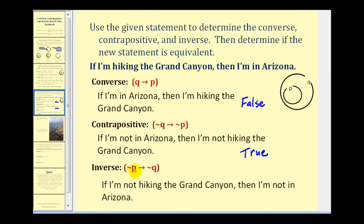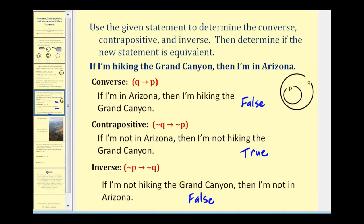The inverse would be if not P then not Q, so: if I'm not hiking the Grand Canyon, then I'm not in Arizona. If I'm not hiking the Grand Canyon, that means I'm outside P. Just because I'm outside P doesn't mean I'm outside Q. So this is not logically equivalent to if P then Q. For this specific case, the inverse would be false, because there are a lot of other places to be in Arizona other than the Grand Canyon. For example, if I'm in Phoenix, I'm not hiking the Grand Canyon, but I am in Arizona.